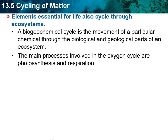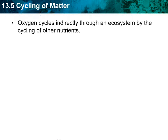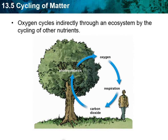The main processes involved in the oxygen cycle are photosynthesis and respiration. Oxygen is a key element found in lots of these different cycles in one form or another. In the oxygen cycle, it directly goes through an ecosystem by the cycling of other nutrients. Plants create oxygen in photosynthesis; we take it in by eating plants or eating animals that have eaten plants. We do respiration, which gives off carbon dioxide, which plants take back in.